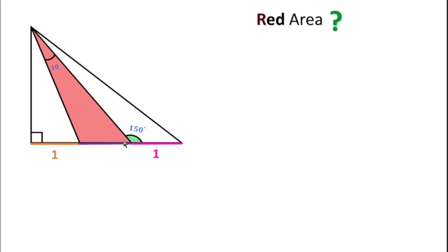Now, to solve this question, I will consider the height of the right angle triangle as h units — this line here — and this purple line segment length as x units.